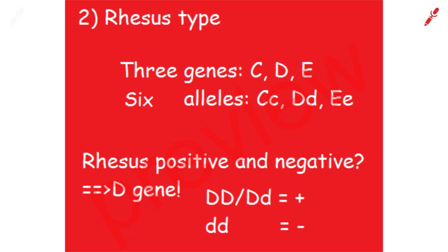Now we continue to the rhesus type. The rhesus type consists of 3 genes: C, D and E, and 6 alleles: Cc, Dd, Ee. Now we are going to discuss the D gene.